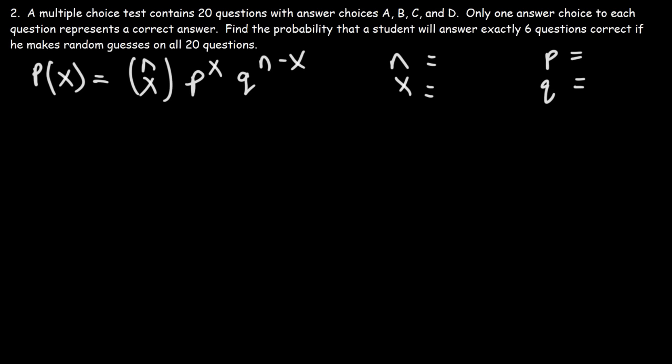n is the number of trials — in this case, 20 questions. The student needs to answer exactly six questions correct out of 20, so x is 6. p is the probability of getting a question right by randomly guessing. There are four answer choices, one of which is correct, so p is 1 out of 4, or 0.25. The probability of guessing wrong is 3 out of 4, which is 0.75.